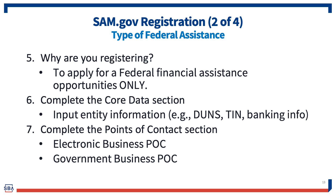First, you'll validate your DUNS information — the system will compare the entity's DUNS data with the information you've entered in SAM, including entity name and physical address. It's very important to make sure the way you enter information in SAM is exactly the same as what you've entered in DUNS. Next, you'll enter business information including your business start date, fiscal year-end close date, and where you create your MPIN — Marketing Partner Identification Number. The MPIN acts as a password in other government systems and serves as your signature for consent to disclosure of tax information to the IRS. Finally, you'll enter your tax identification number — generally your employer ID number or social security number depending on your business structure — and sign the consent to disclosure of tax information with your MPIN.